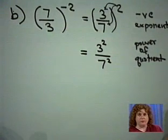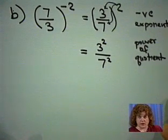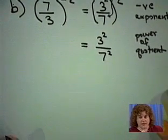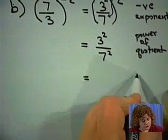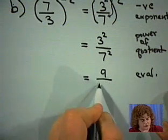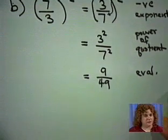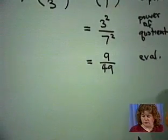We have positive powers. We have simplified our expression. We can evaluate it now. 3 squared is 9 and 7 squared is 49. So we have 9 forty-ninths.